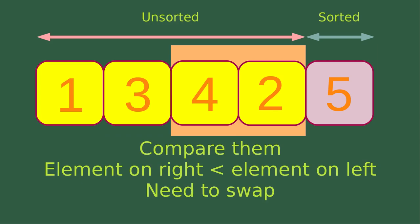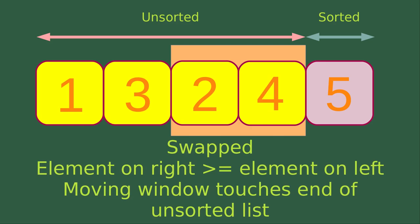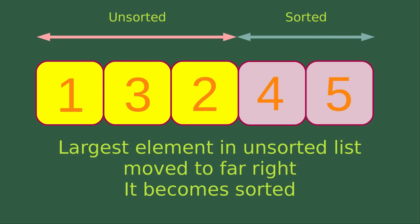Then I move my window to the next two adjacent elements and compare them. The element on the right-hand side is smaller than the element on the left-hand side, so I need to swap the two numbers. The two numbers are now swapped, and the moving window has touched the end of the unsorted list, indicated by the pink arrow. The largest element in the unsorted list is already moved to the far right. Numbers 4 and 5 are already sorted and placed on the sorted part of the list.